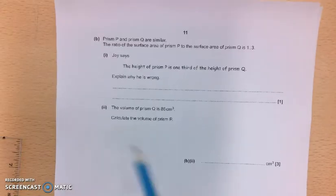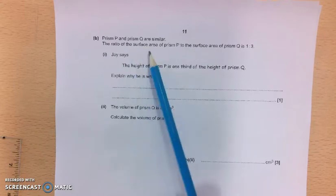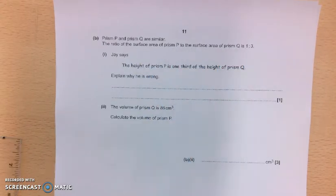Then part B. Two prisms, which are similar. So the ratio of the surface area of prism P to the surface area of prism Q is 1 to 3.